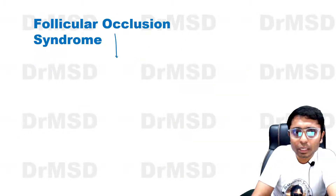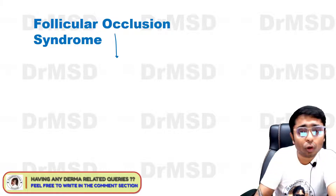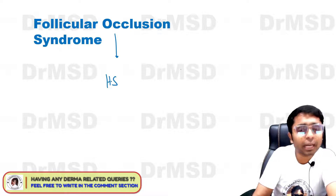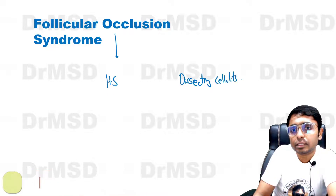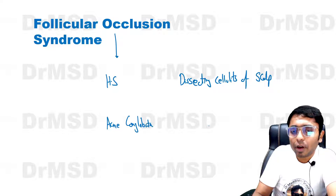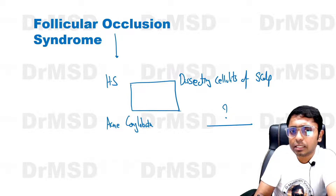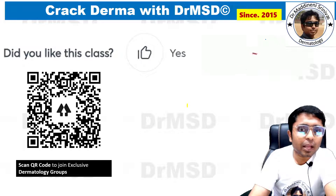One question for all of you: follicular occlusion syndrome is going to have four components. One of them is Hidradenitis Suppurativa; the others are dissecting cellulitis of the scalp and acne conglobata. My question to all of you is: what is the other component which forms the tetrad in follicular occlusion syndrome? Post your answer in the comment section below.